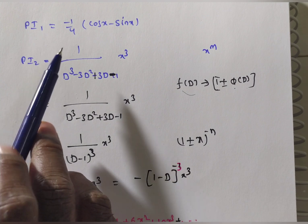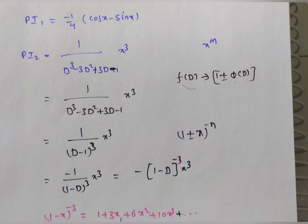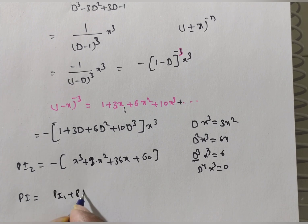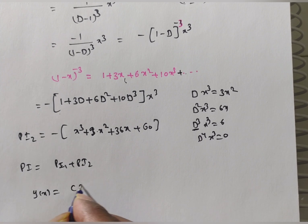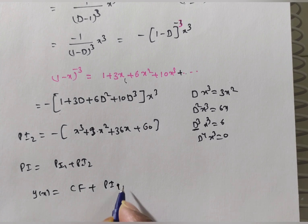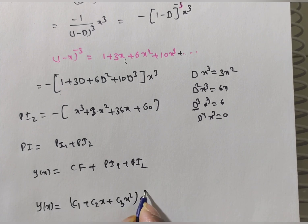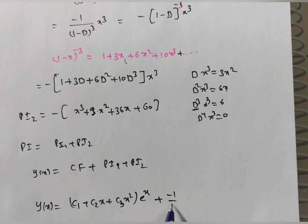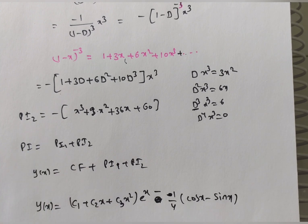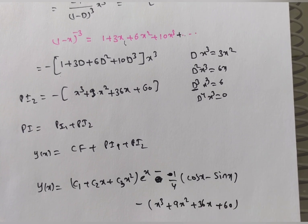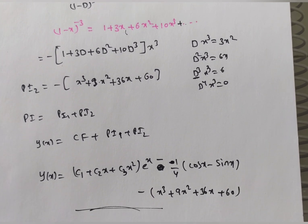The total particular integral is PI = PI₁ + PI₂. The general solution is y(x) = CF + PI: y(x) = (c₁ + c₂x + c₃x²)eˣ - (1/4)(cos x - sin x) - (x³ + 9x² + 36x + 60). This is the final solution. Thank you for watching this video.